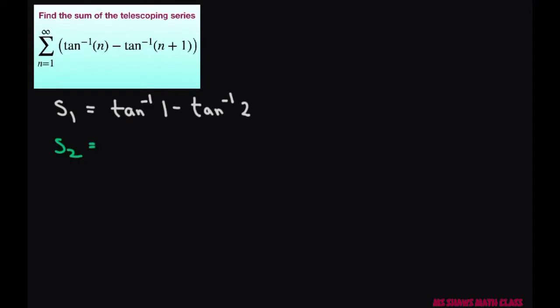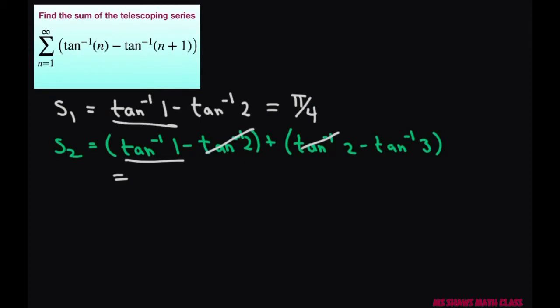And then our second partial sum is going to be, we're just going to keep copying down what we have so we can see the telescoping nature of our series. So the next term we're going to have is inverse tan of 2 minus inverse tan of 3. So what happens is these two will cancel out. So this is just going to equal inverse tan of 1, which is pi divided by 4, minus inverse tan of 2. So this one's going to be the same thing. We're going to have pi divided by 4 minus inverse tan of 3.